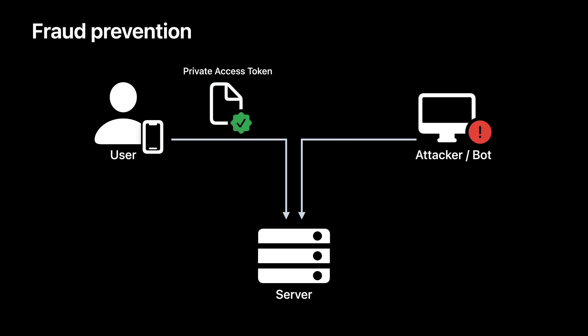Private access tokens are what allow your servers to automatically trust clients — new in iOS 16 and macOS Ventura. Before explaining how these tokens work, I'm going to show them in action.